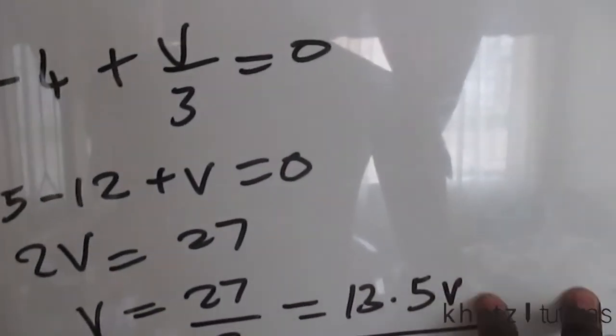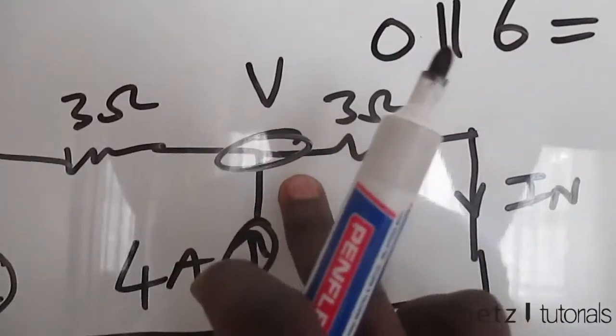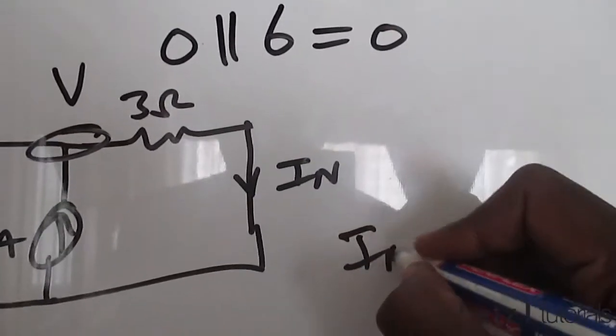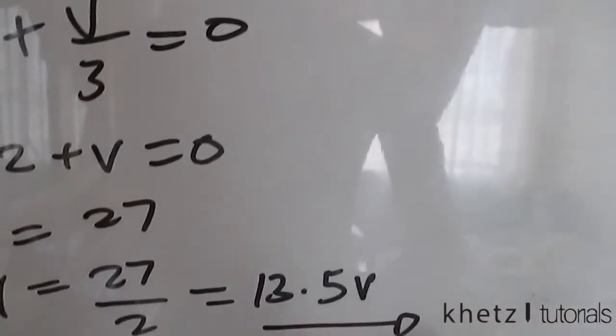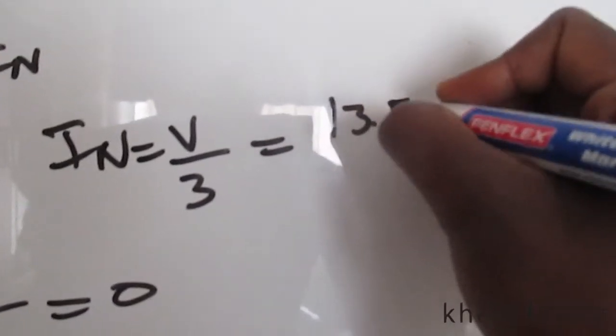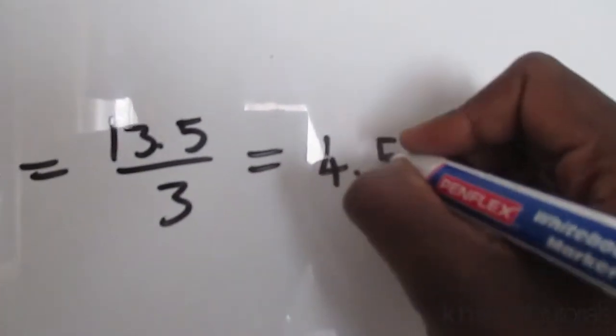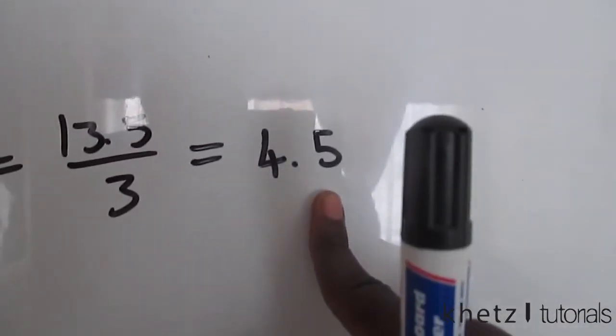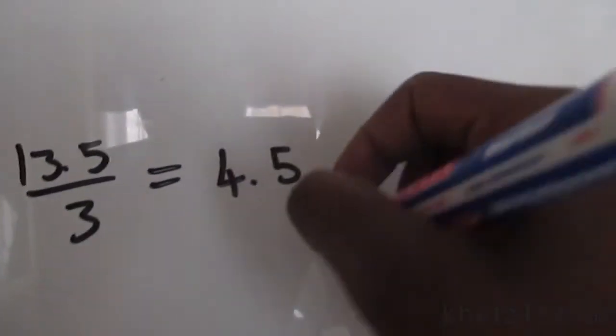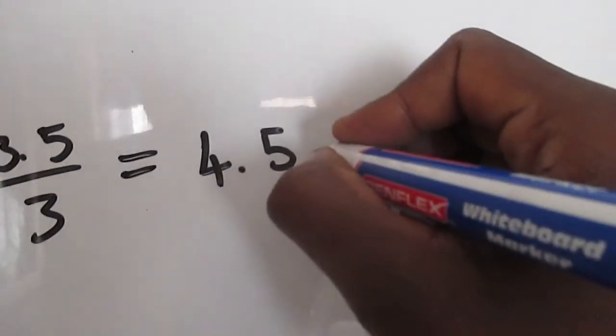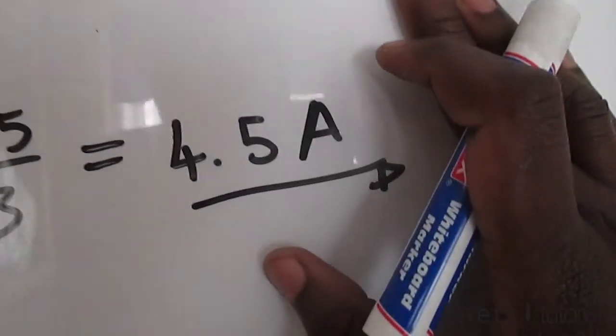So this is 13.5 but we're interested in finding IN. But what is IN in terms of V? So IN is V divided by 3. So we found our V to be 13.5, so we're going to say 13.5 divided by 3, and the answer to that is 4.5. 4.5 times 2 is 9, then adding 4 you have 13, and then adding a half you have 13 and a half. So 4.5 amperes is your IN. And this is how you solve this particular problem.